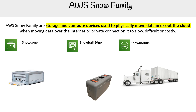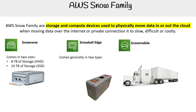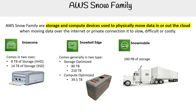Let's take a quick look at the shape they come in. Snow Cone comes in two sizes: we have an eight terabyte of storage, which has hard disk drives, and then we have a 14 terabyte of storage with solid state drives. Then Snowball Edge generally comes in two types: we have the storage optimized and the compute optimized.